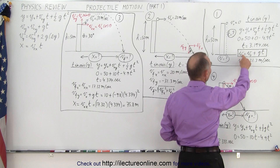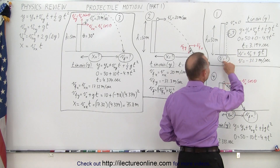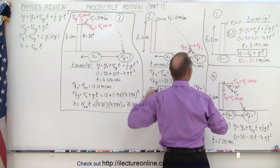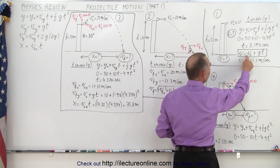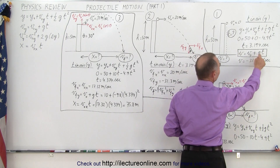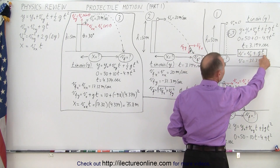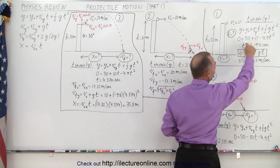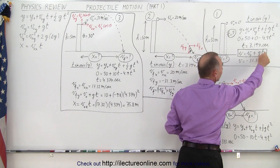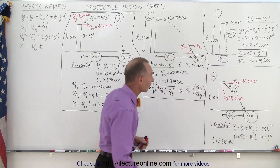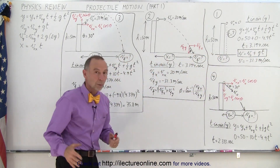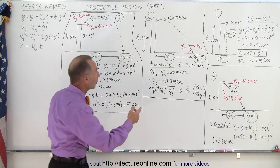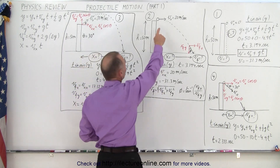We solve for time. Once you have the time, you can solve for the velocity when it reaches the ground using the second equation: initial velocity in the y direction plus g times t. Remember g is minus 9.8. You plug in the time and you get the final velocity.